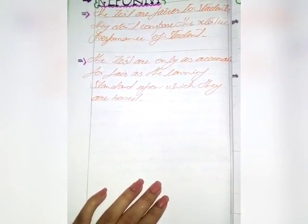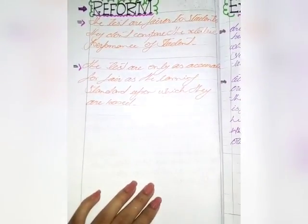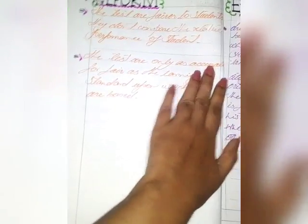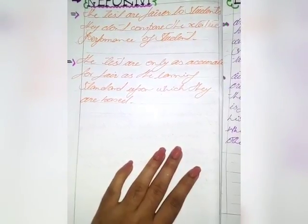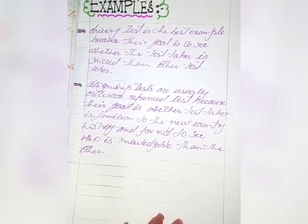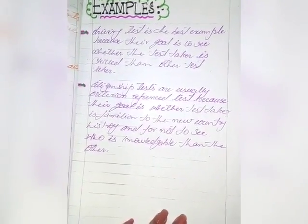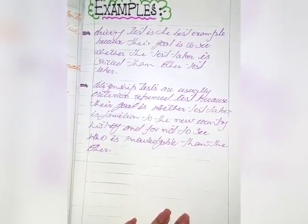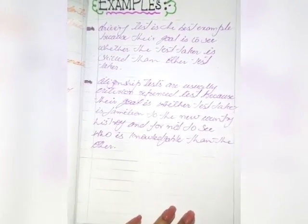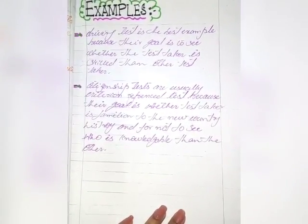Limitations of CRT: the tests are fairer to students because they don't compare the relative performance of one student to another. However, the tests are only as accurate as the learning standards upon which they are based. Examples of CRT include the driving test, where the goal is to see whether the test taker is skilled enough — not to compare against other test takers. Citizenship tests are also criterion reference tests, where the goal is whether the test taker is familiar with the new country's history, not to see who is more knowledgeable than others. Thank you.